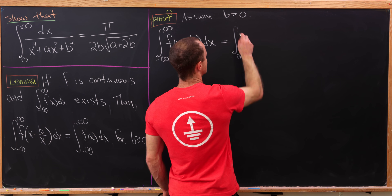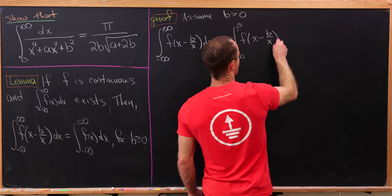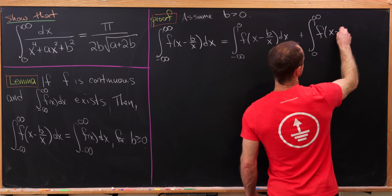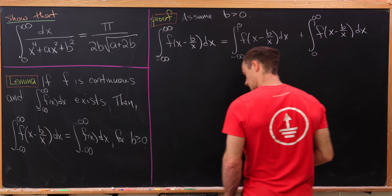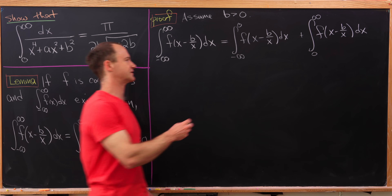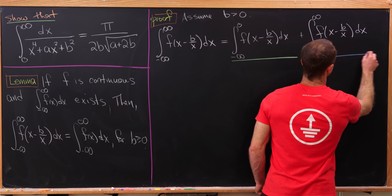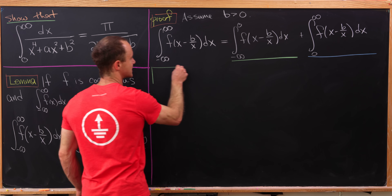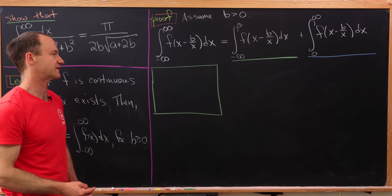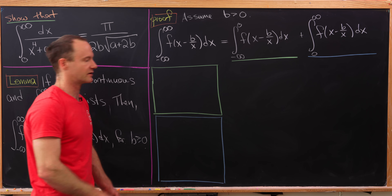We'll write this as the integral from minus infinity to zero of f of x minus b over x dx, and then plus the integral from zero up to infinity of the same function. Now we're going to apply a change of variables to both of them. I'm going to underline the first integral in green and the second integral in blue. I'll make a green box where we do all our calculations for the green underlined integral, and a blue box for the blue underlined integral.